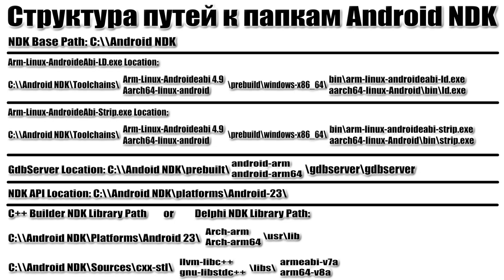In the strip location line, specify the path to the ARM Linux Android ARBistrip.exe or strip.exe file, located in the same folder as the previous one. In the 'GDB server location' line, specify the path to the GDB server file, which is located in the NDK folder under prebuilt, then the Android-ARM folder for 32-bit, or Android-ARM64 for 64-bit, and then the GDB server folder containing the file.